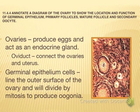We're going to stay with the female cycle. Assessment 11.4.4 asks us to annotate a diagram of the ovary to show the location and function of germinal epithelium, primary follicles, mature follicles, and the secondary oocyte. Here we have a light micrograph of an ovary with some developing eggs, and we're going to learn all the different names in this process.